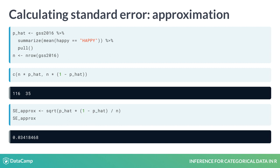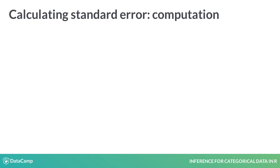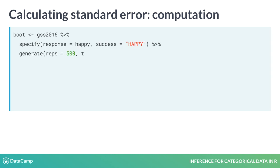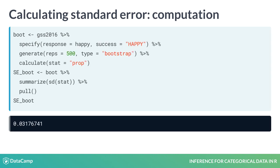That's the approximation approach. How does it compare to our original computational approach using the bootstrap? Well, if we construct the bootstrap distribution for p-hat, then summarize it by finding its standard deviation, we estimate a standard error of about 0.032. Those are remarkably similar values.